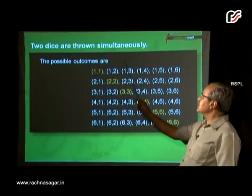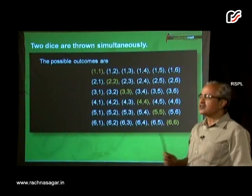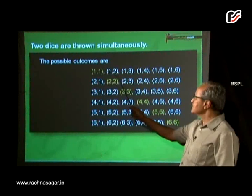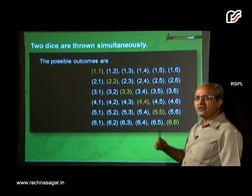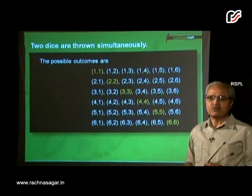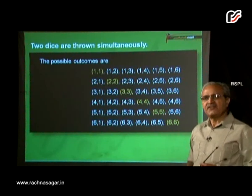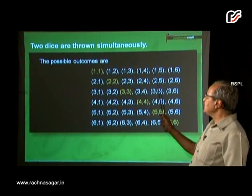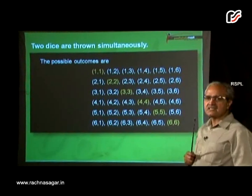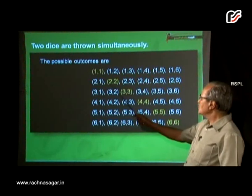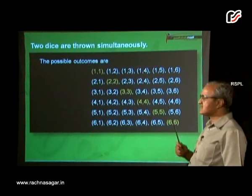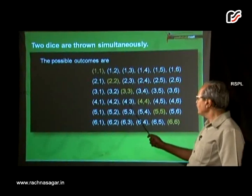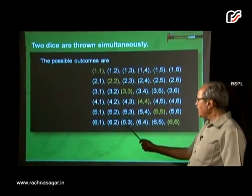When two dice are thrown simultaneously, different possible outcomes are listed as combinations. Because on each die we have 6 numbers, 1 to 6, different combinations can be: (1,1), (1,2), (1,3), (1,4), (1,5), (1,6). Similarly, (2,1), (2,2), up to (2,6). Then (3,1), (3,2), up to (3,6). Then (4,1), (4,2), up to (4,6). Then (5,1), (5,2), (5,3), up to (5,6).